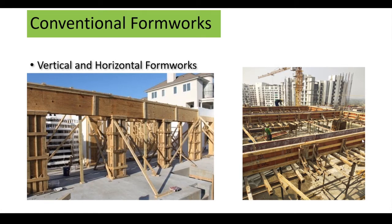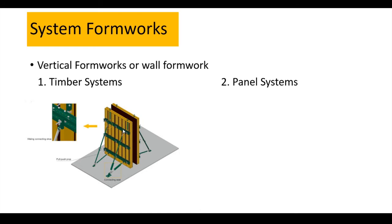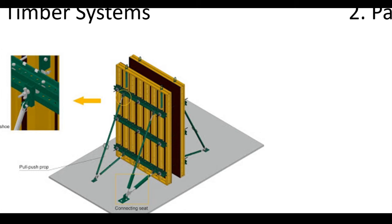In system formwork for vertical, there are two types: timber systems and panel systems. Timber system uses the same principle derived from conventional formwork — you can see similar components. But the difference is that each component is pre-designed; we know each component's strength and capacity. This is very helpful for the designer when designing formwork, specifying distances between vertical timber beams, wailers, and push-pull props. Erection is faster than conventional formwork, yet it is safer, stronger, and has much higher repeatability.